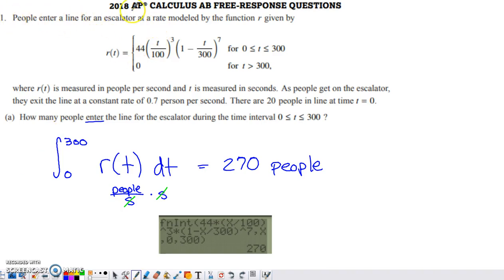This is number one from the 2018 AP Calc AB as well as the BC exam. It's a question that deals with a rate of change and it's one that we are allowed to use our calculator on.